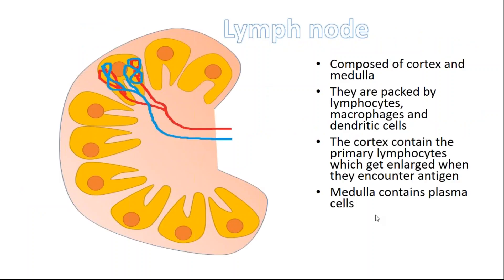Lymph node is composed of cortex and medulla. The uppermost region here is cortex and the lowermost region here is medulla. They are packed by lymphocytes, macrophages, and dendritic cells. The cortex contains the primary lymphocytes which get enlarged when they encounter the antigen. Medulla contains plasma cells.